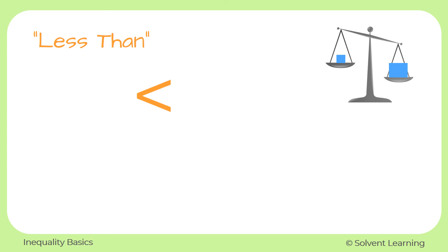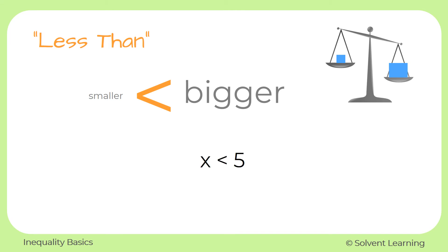Next, we have the less than symbol. Notice that the symbol is pointing the other way — it's pointing to the left. On the left side we'll have the smaller value; think of it as the arrow pointing towards the smaller value. And on the right side we'll see the bigger value. So if we say x is less than 5, then x could be any number smaller than 5 — it could be 4, it could be 0, it could be negative 10,000.